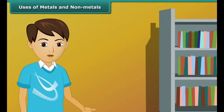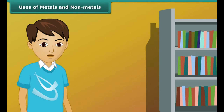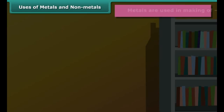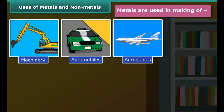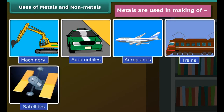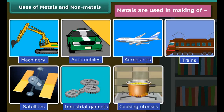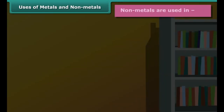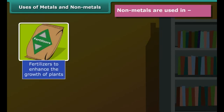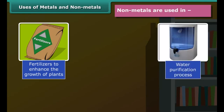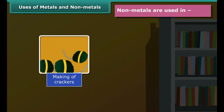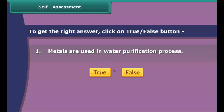Till now we have learned about the physical and chemical properties of metals and non-metals. Now let's move on to another important topic — the uses of metals and non-metals. Metals are hard in nature, so they are used in making machinery, automobiles, aeroplanes, trains, satellites, industrial gadgets, cooking utensils, and water boilers. Non-metals are used in fertilizers, water purification processes, life-supporting air, crackers, and as antiseptics on wounds.